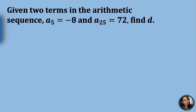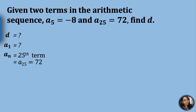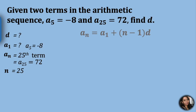There is another problem: given two terms in the arithmetic sequence, a sub 5 equals negative 8 and a sub 25 equals 72, find d. d is unknown, there is no a sub 1. Our a sub n is a sub 25, which is 72, and n is 25. We also have a sub 5, which is negative 8. Instead of using our original formula, we change the 1s to 5, because we don't have the first term but we have the fifth term. The formula becomes: a sub n equals a sub 5 plus n minus 5, times d.